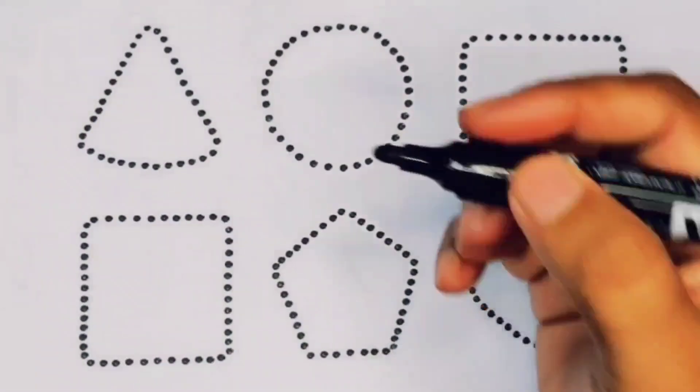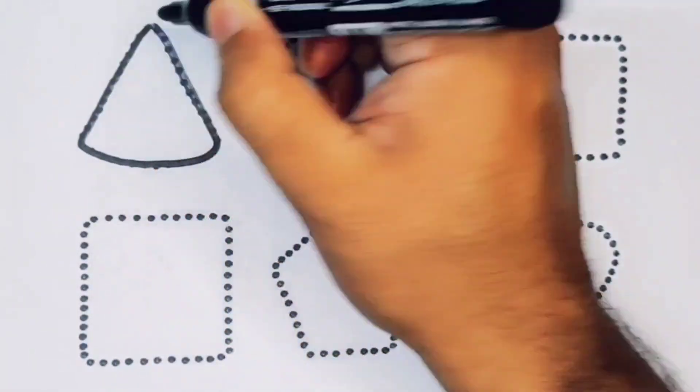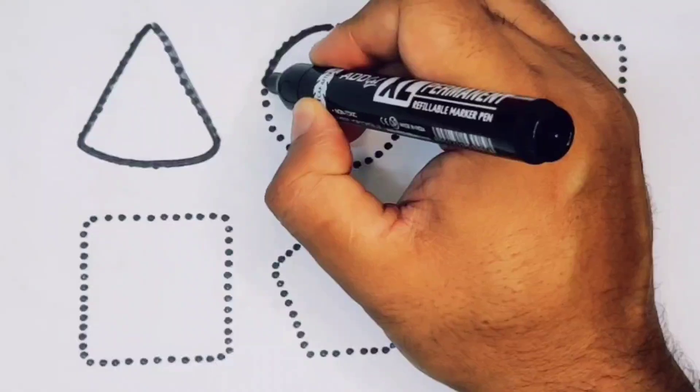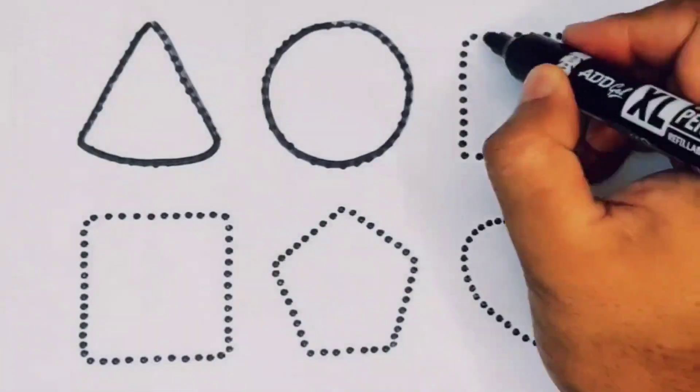First, we are going to draw the shapes. Triangle, circle, rectangle.